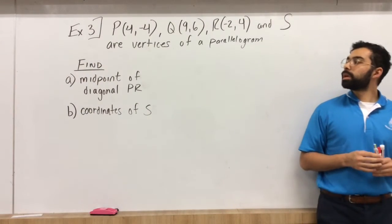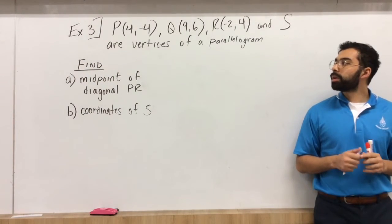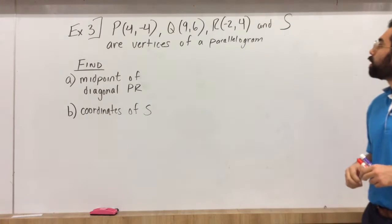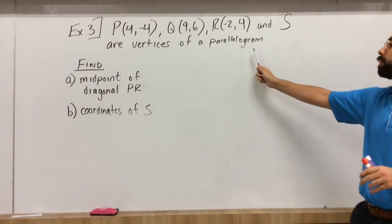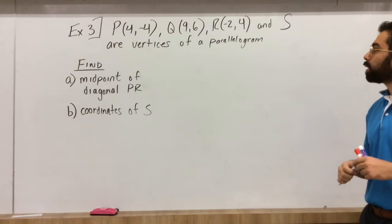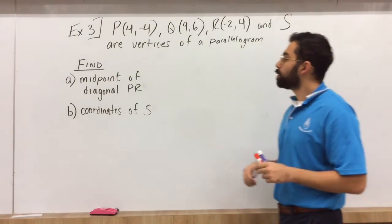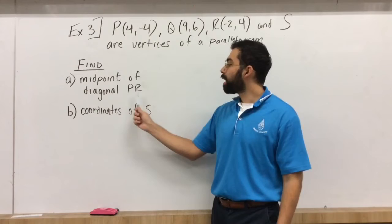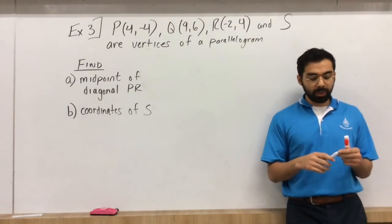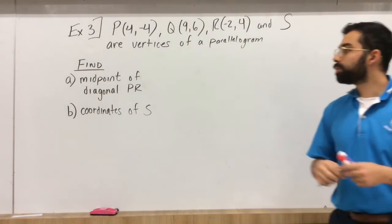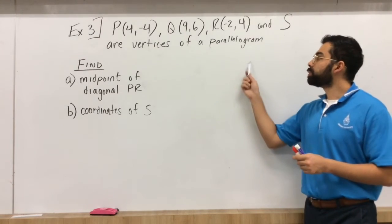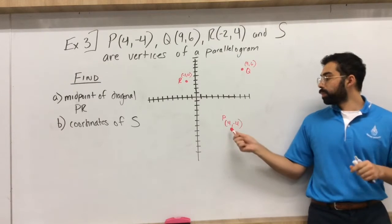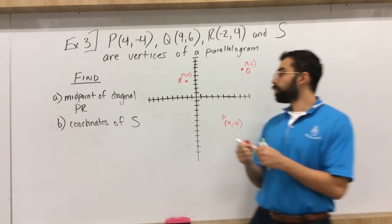So in this example we have P, Q, R, and S which is missing an ordered point. They're vertices of the parallelogram. What we're given to look for is the midpoint of the diagonal PR and the coordinates of S. So remember when you do these problems, the first thing you should do is to draw a picture of this parallelogram. Okay, so we do have the points P, Q, and R.